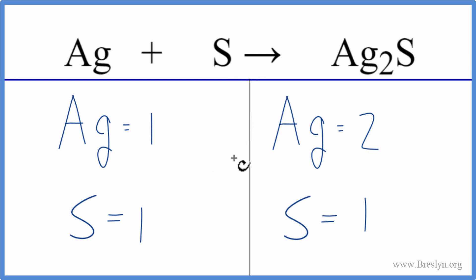So let's change the coefficients. Since we have two silvers on this side, let's put a coefficient of 2 in front of the silver. We have 1 times 2, so that'll give us two silver atoms. So these are the same on both sides.